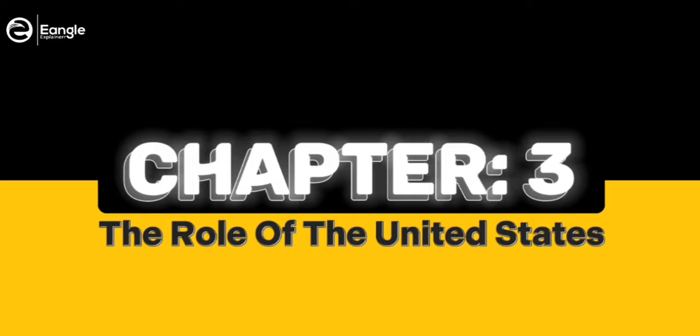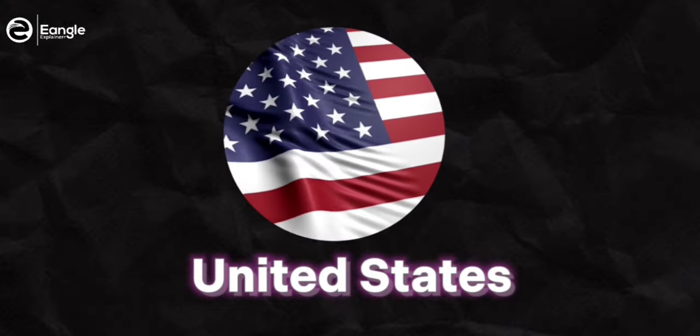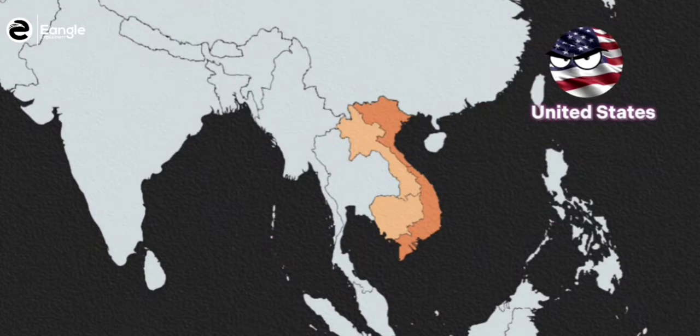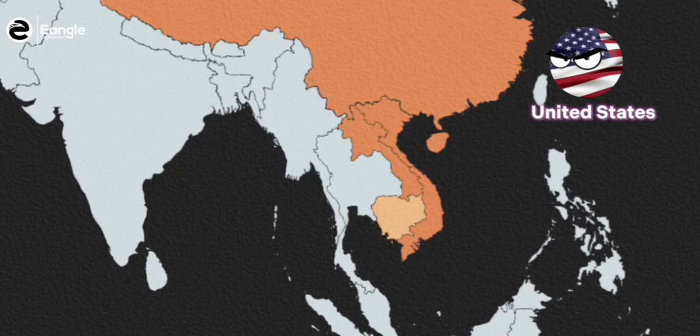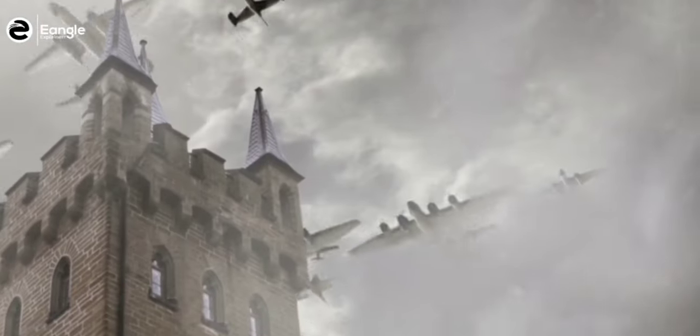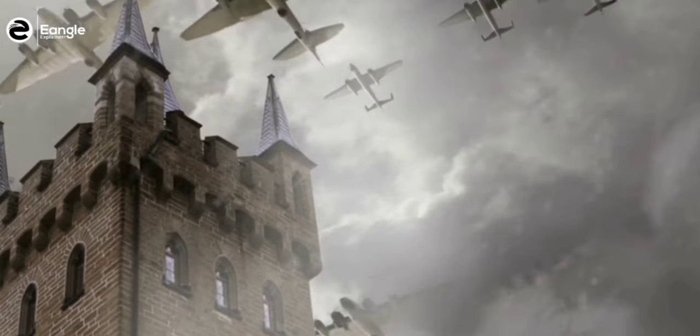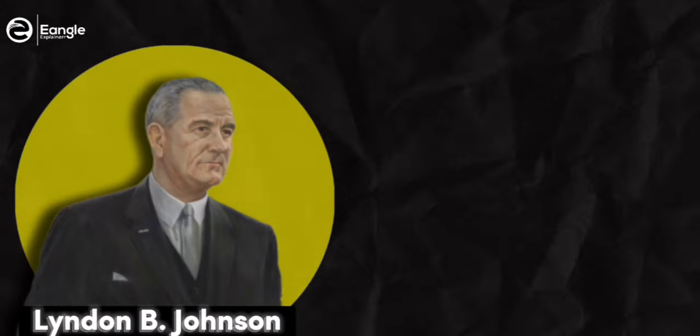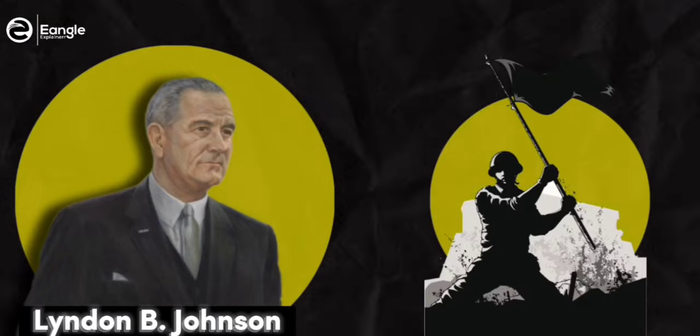The United States became increasingly involved in the conflict, viewing it as part of a larger struggle against the spread of communism in Southeast Asia. In 1964, after a U.S. warship was attacked by North Vietnamese forces in the Gulf of Tonkin, President Lyndon B. Johnson authorized a massive escalation of American military involvement. Over the next several years, U.S. forces fought a grueling and often brutal war against the communist forces in North Vietnam and their allies in the South. The war was characterized by large-scale bombing campaigns, ground combat, and the use of chemical weapons such as Agent Orange.